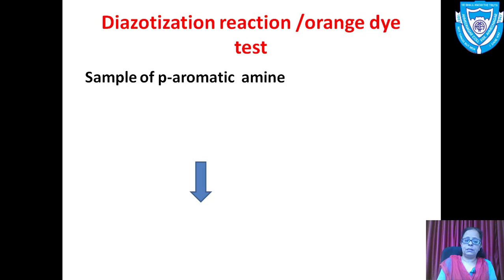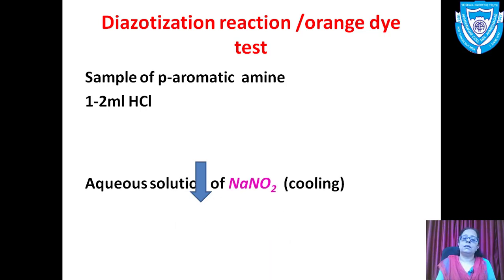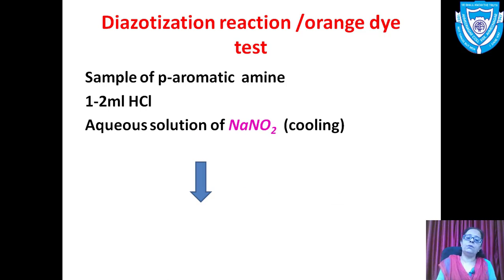To the sample, 1 to 2 mL of concentrated HCl is added. The solution is cooled, and an aqueous solution of NaNO₂ (sodium nitrite) is added. This whole reaction is carried out in cold conditions, at around 0°C.